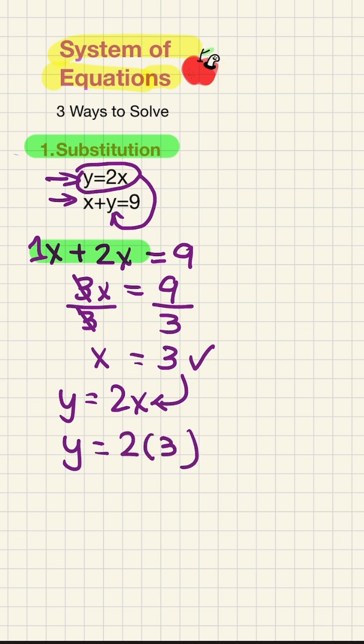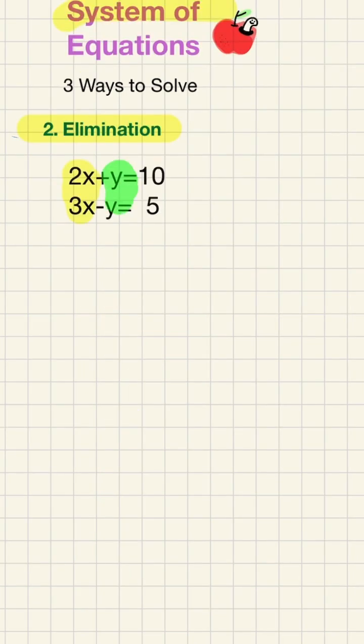Let's do our second strategy. This time we're going to learn elimination. We can just add or subtract to let one variable disappear so we can solve for another. In this case, positive y minus y equals 0, so they're eliminated.